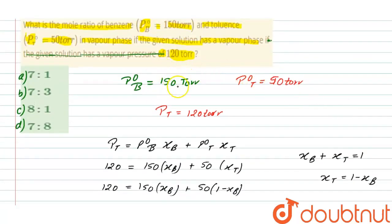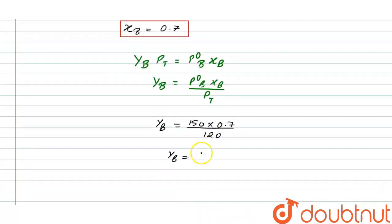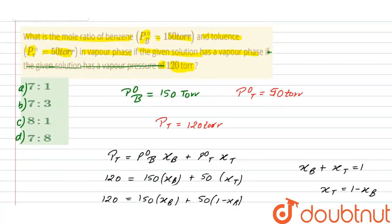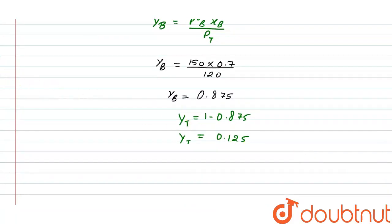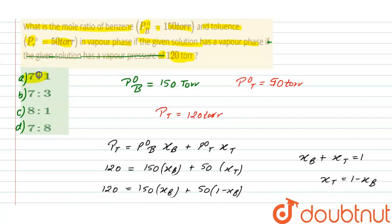Calculating: y_B = 0.875, and y_T = 1 − 0.875 = 0.125. The mole ratio of benzene to toluene in the vapor phase is y_B / y_T = 0.875 / 0.125 = 7:1. So the correct option is option A, that is 7:1.